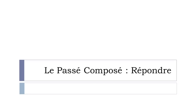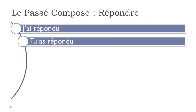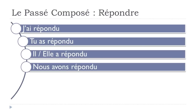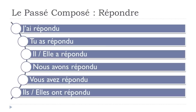Le passé composé de 'répondre' (to answer): 'j'ai répondu,' 'tu as répondu,' 'il a répondu,' 'elle a répondu,' 'nous avons répondu,' 'vous avez répondu,' 'ils ont répondu,' 'elles ont répondu.' 'Répondre' becomes 'répondu' — you don't add masculine/feminine/plural forms to the participe passé when using 'avoir.'